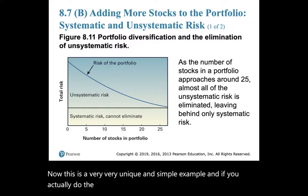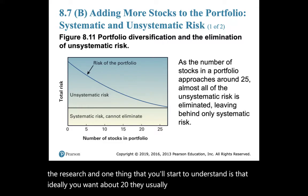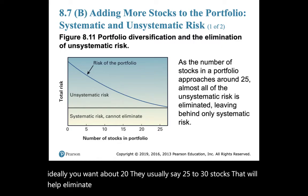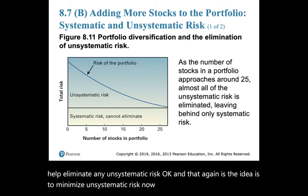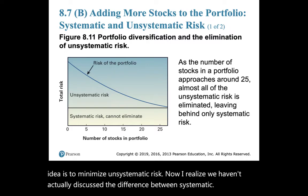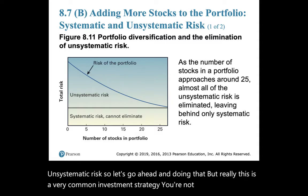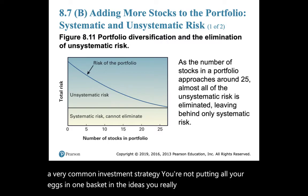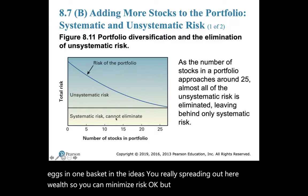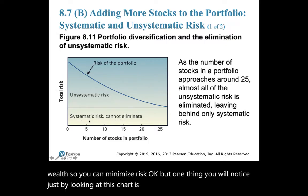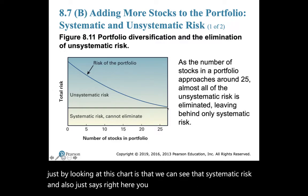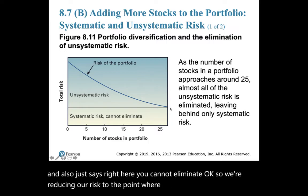This is a very simple example. Research suggests that ideally you want about 25 to 30 stocks to eliminate any unsystematic risk. Looking at this chart, we can see that systematic risk cannot be eliminated — we can only reduce our risk to the point where we're exposed only to systematic risk. Diversification removes the unsystematic risk.